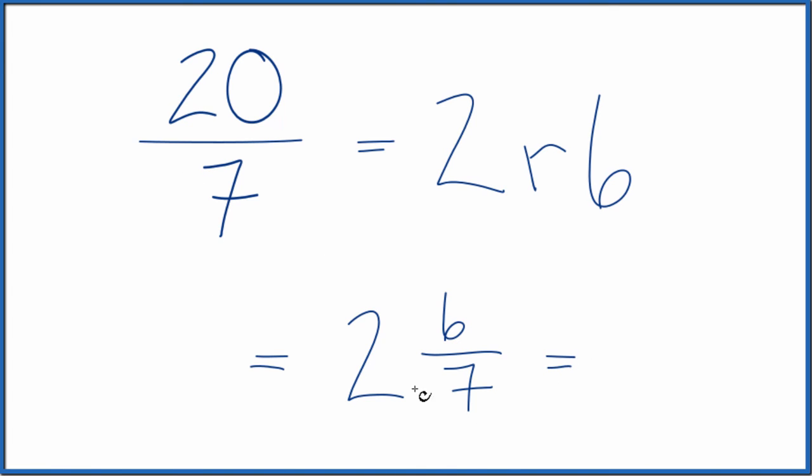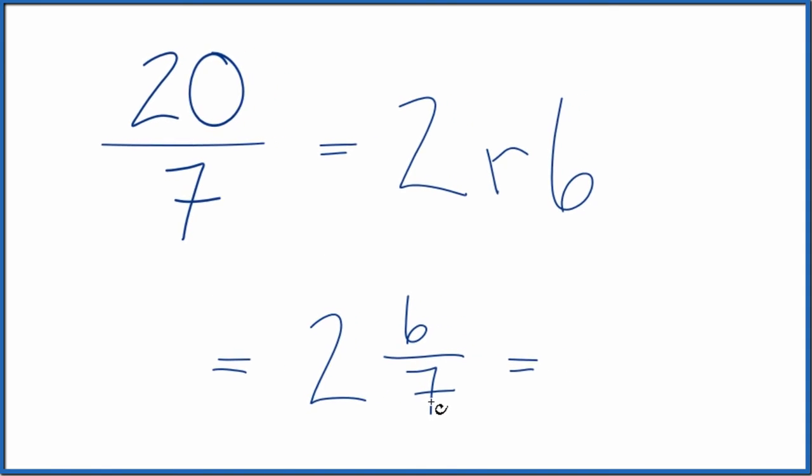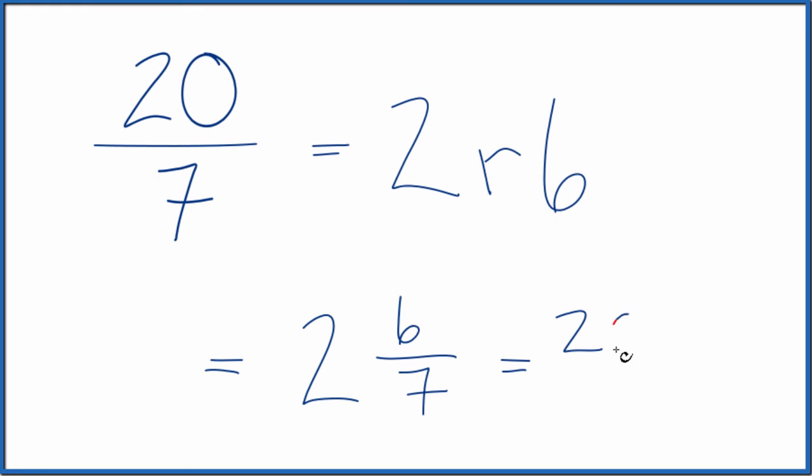And you can check this, 2 times 7 is 14. 14 plus 6 is 20. Put that over our denominator, twenty-sevenths, just like we got before.